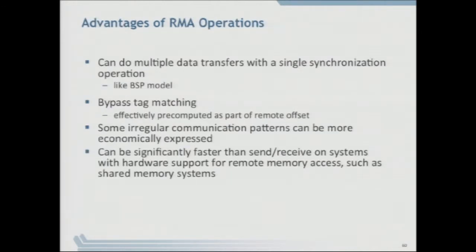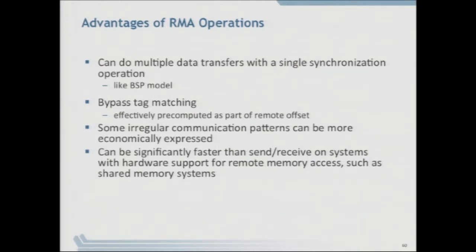The advantages of one-sided: you can do multiple data transfers with a single synchronization operation — you can do many puts and gets and then finally call MPI_Win_Fence or some synchronization to complete all those operations, similar to the bulk synchronous parallel model. There is no tag matching as in MPI sends and receives, so the message queue lookup is bypassed and data gets written directly to the destination memory, making it potentially faster. Also, some irregular communication patterns can be more easily expressed in a one-sided model, because if you don't know beforehand whom you're sending to or receiving from, it's easier to express that in a one-sided manner.